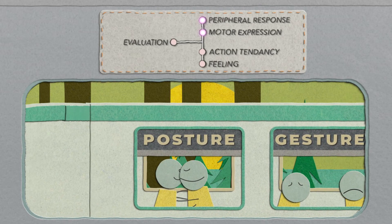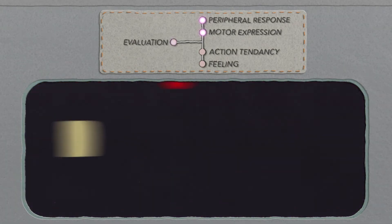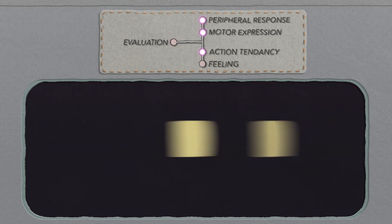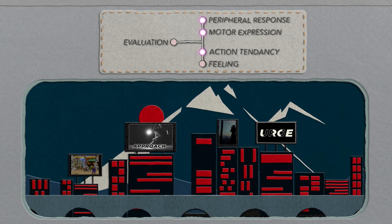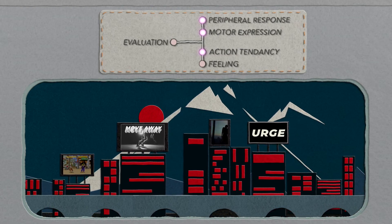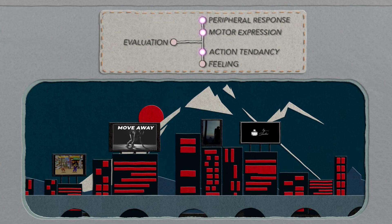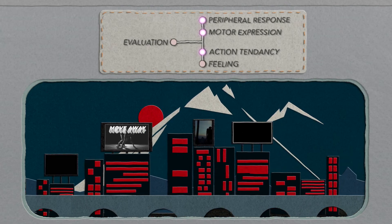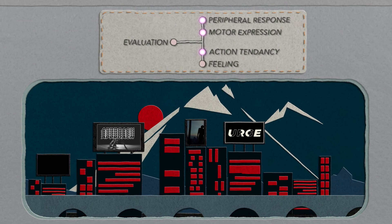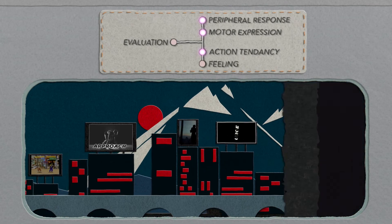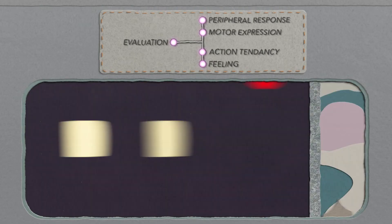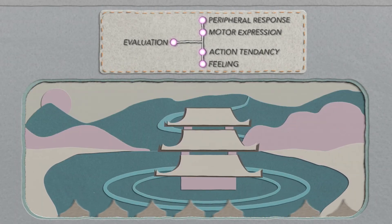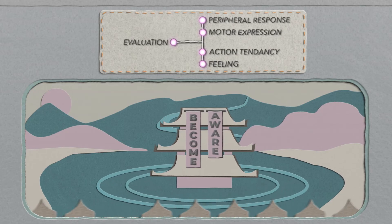Our posture all expresses emotion. The third component of emotional response is called the action tendency. This component changes our relationship with the event and prepares us to act appropriately for the situation. It can, for instance, urge us to move towards or away from the trigger. The fourth and final component of the emotional response is the feeling, which allows us to become aware of our emotions.